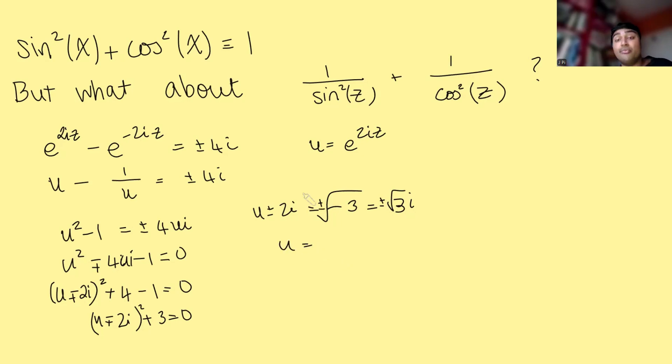So it's either 2i plus root 3i. It's 2i minus root 3i. It's minus 2i plus root 3i. Or it's minus 2 minus root 3i. And I could probably factor the i's out of these. So I might just write this as i times plus or minus 2 plus or minus root 3. And we just remember that there's four possibilities there. So U is one of these four numbers here.